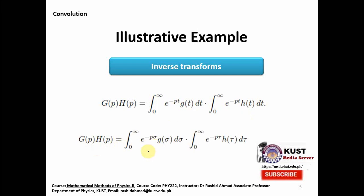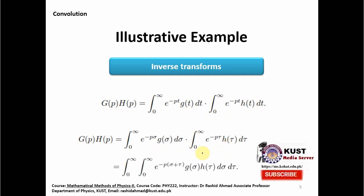Here we make a change of variable to obtain a more convenient form — changing t to sigma and tau. You should not confuse having t in both integrals. In the first integral we change t to sigma, and in the second integral we change t to tau, so that the two Laplace transforms look different from each other. Then we can put these two integrals together, combining the exponentials as e^(−p(σ + τ)), resulting in a double integral.